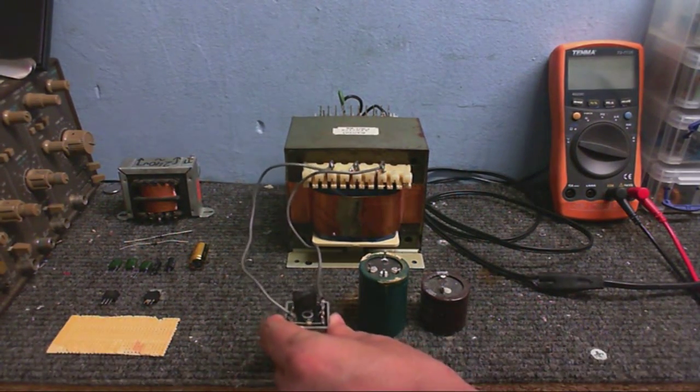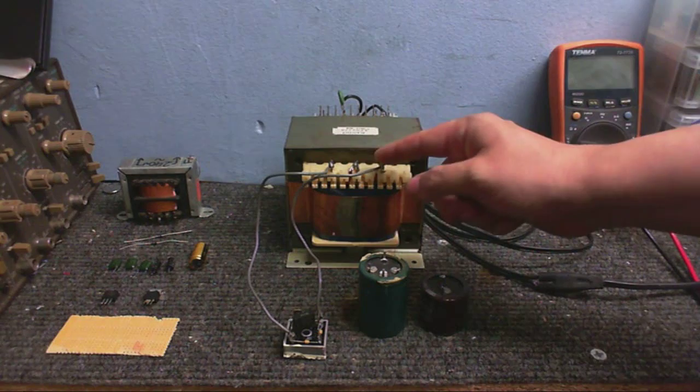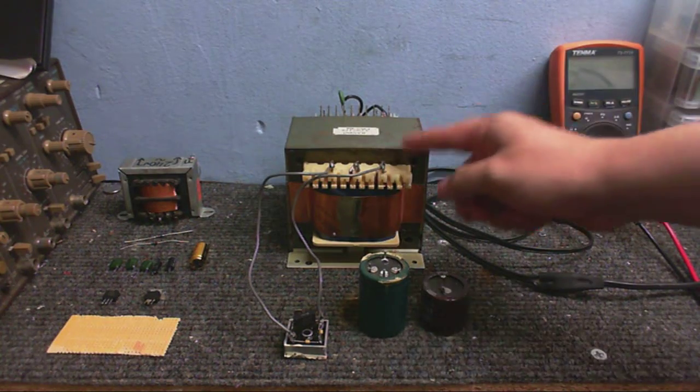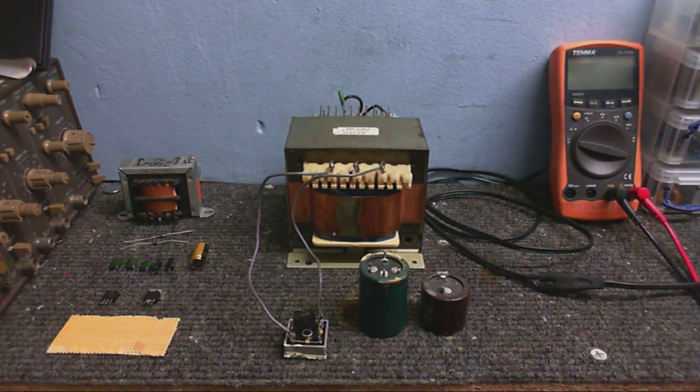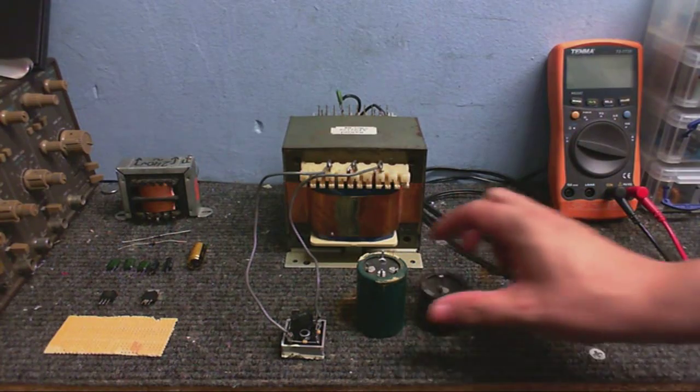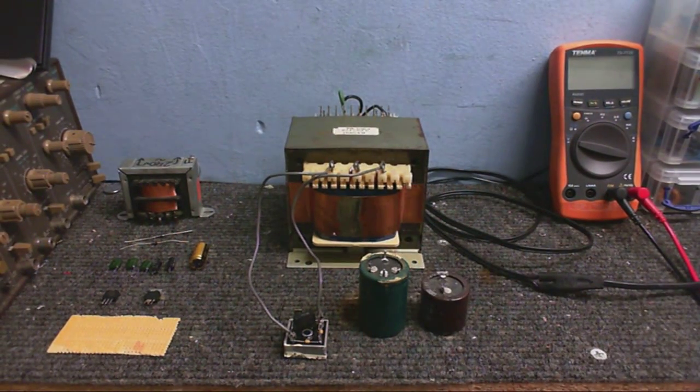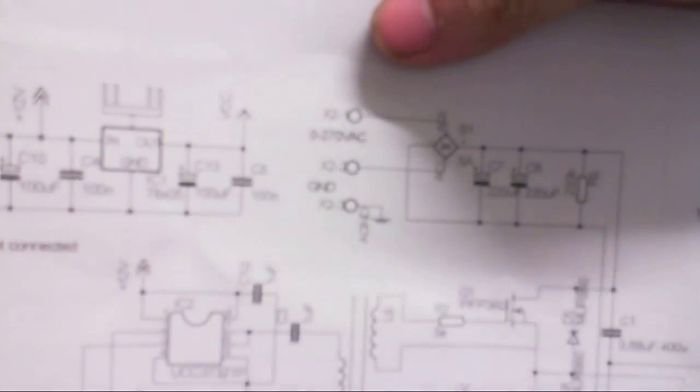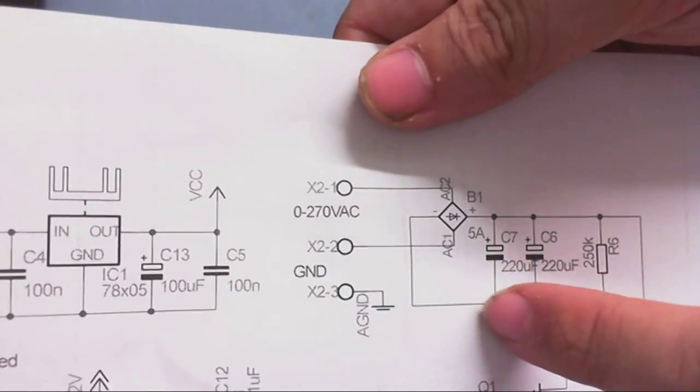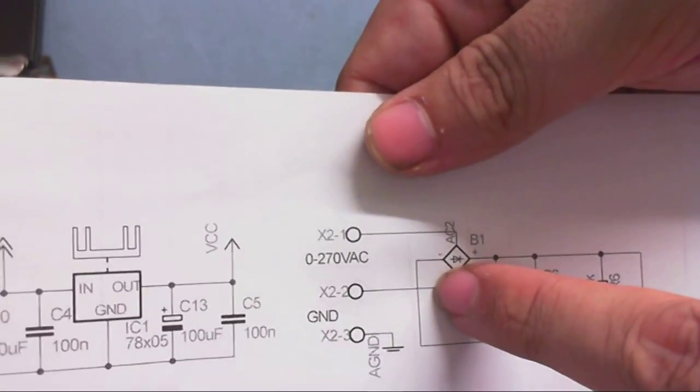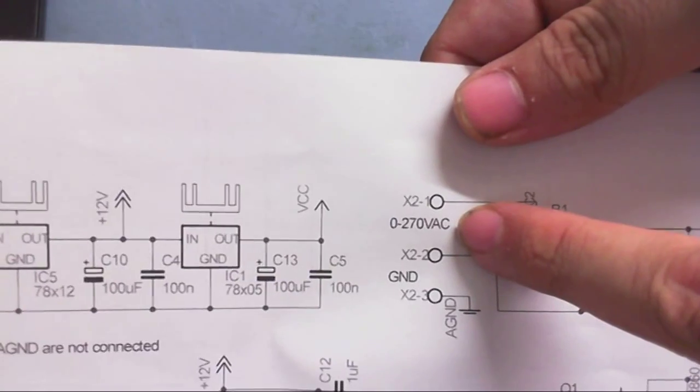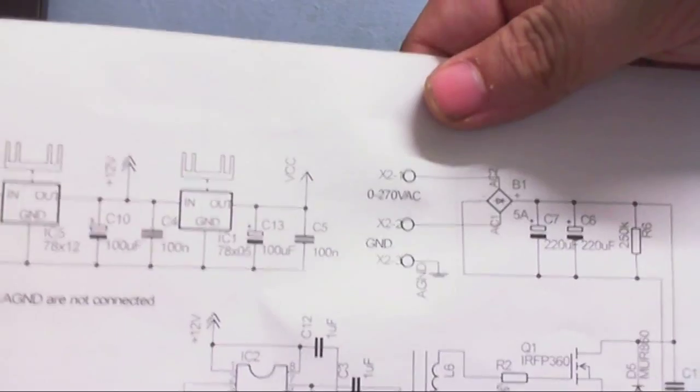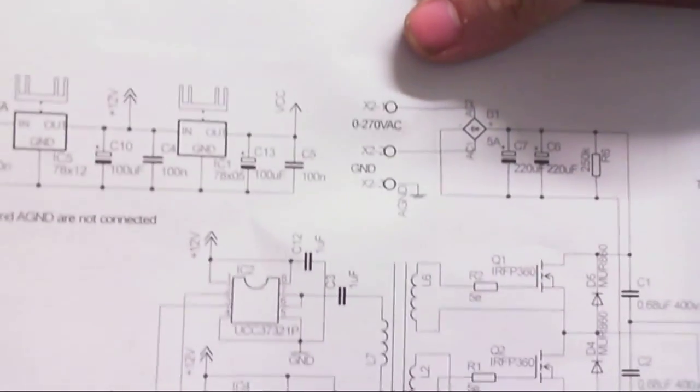Right, so we've got the rectifier hooked up to the transformer. This is just a temporary connection, so those wires are not soldered on, because I want to be able to swap out different transformers. Maybe I should put some kind of clips on the ends of those wires. So now we've got to hook up our two capacitors. I'm building this, and what we're actually building is this part of the circuit right here. There's the rectifier.